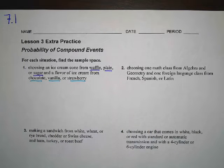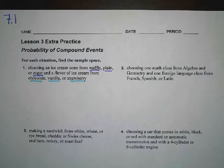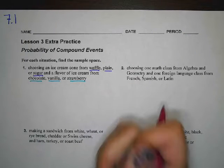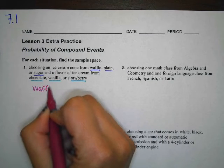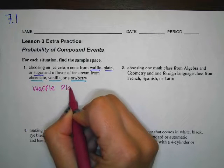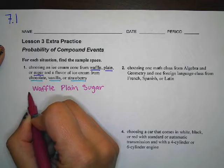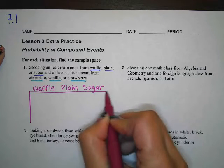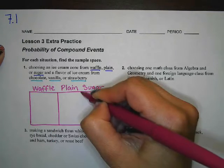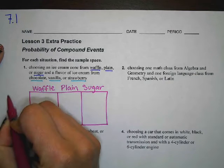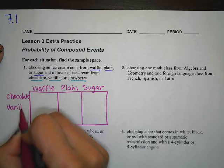We have two different things working together to give us an outcome. Let's do it as a table. So we have waffle cones, plain cones, and sugar cones — three things there. Then for our choices of ice cream flavors, we have chocolate, vanilla, and strawberry.